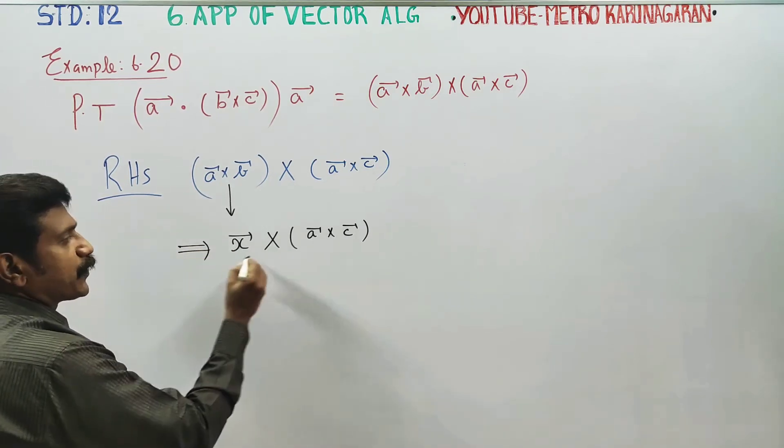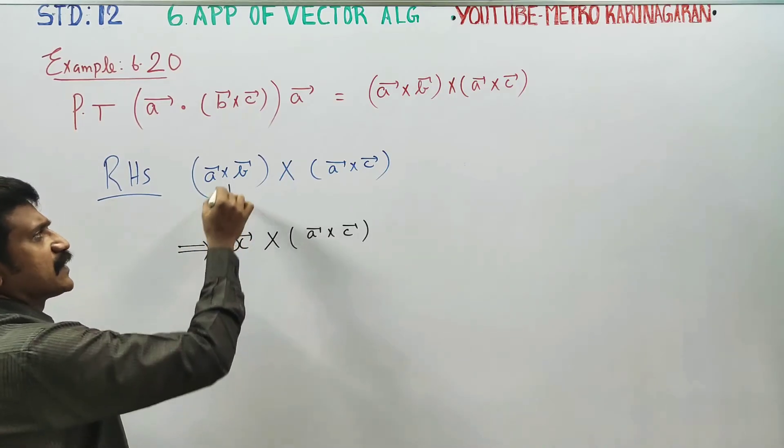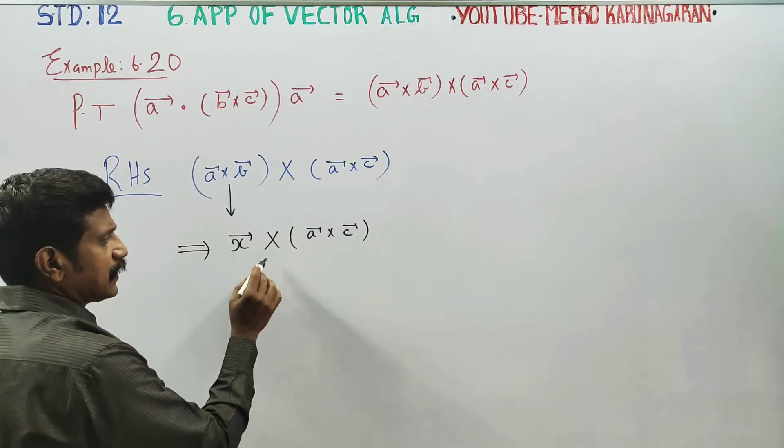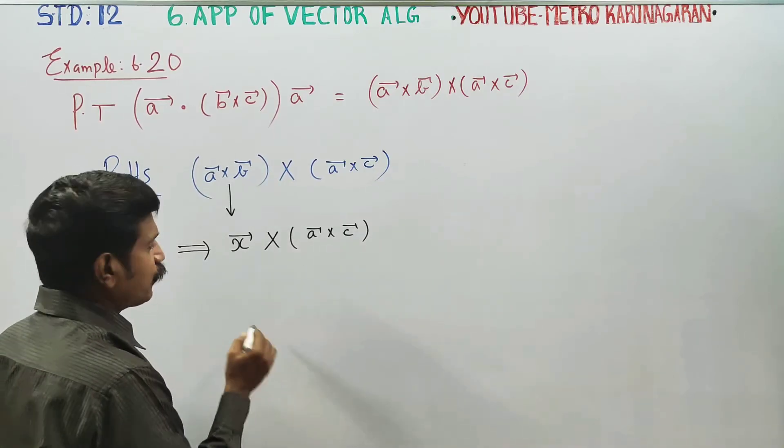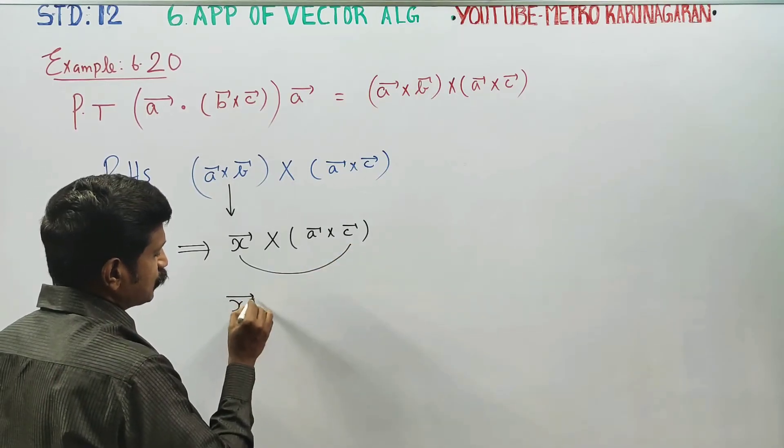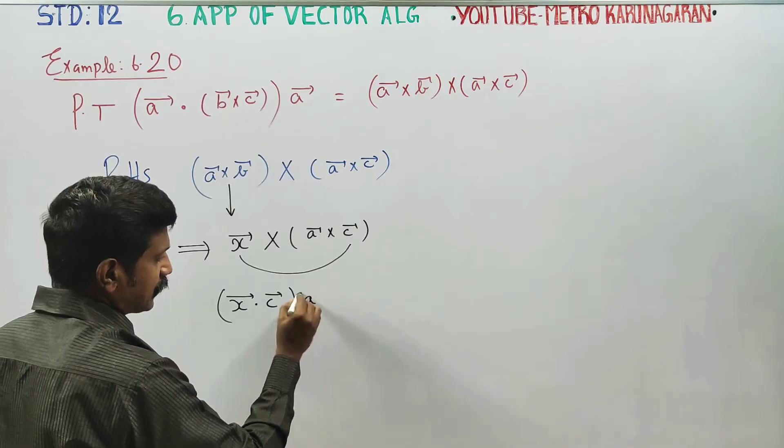Vector triple product: a cross B. X vector equals A cross B. If you want to know the formula, it's A cross C. First, outer dot is X dot C. Balance is ordinary multiplication.